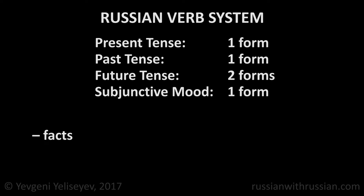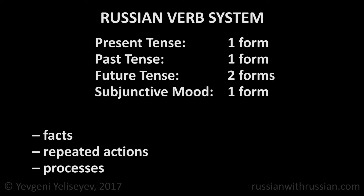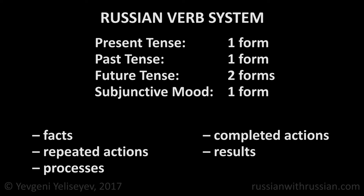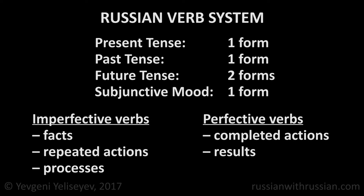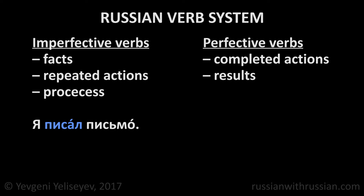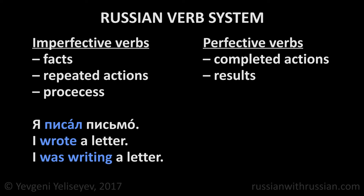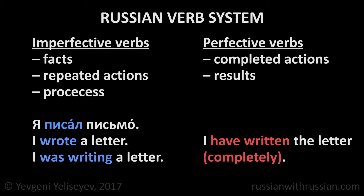Meanwhile, in order to distinguish a simple fact, a repeated action or process from a completed action or result, we use different verbs. Some Russian verbs are imperfective, others are perfective. The sentence Я писал письмо doesn't mean that the letter has been written completely — it just specifies a simple fact or process in the past. But if I want to say that the letter has been written completely, I should use the perfective verb написать: Я написал письмо.